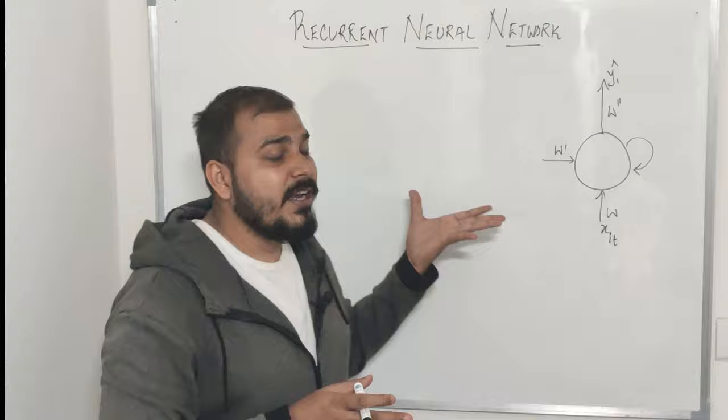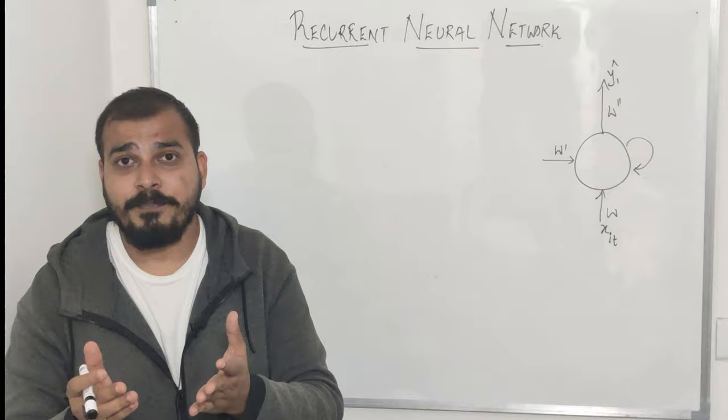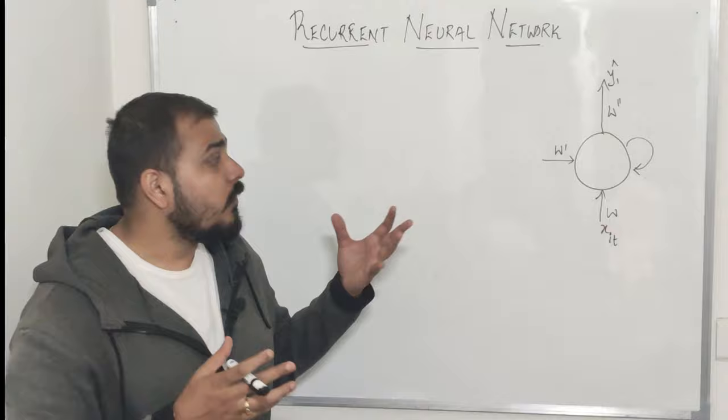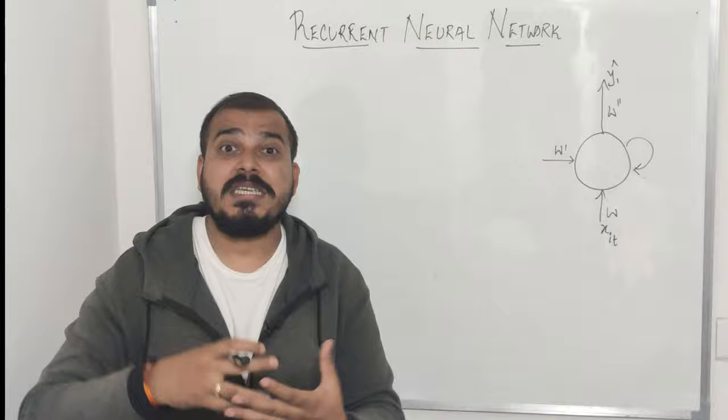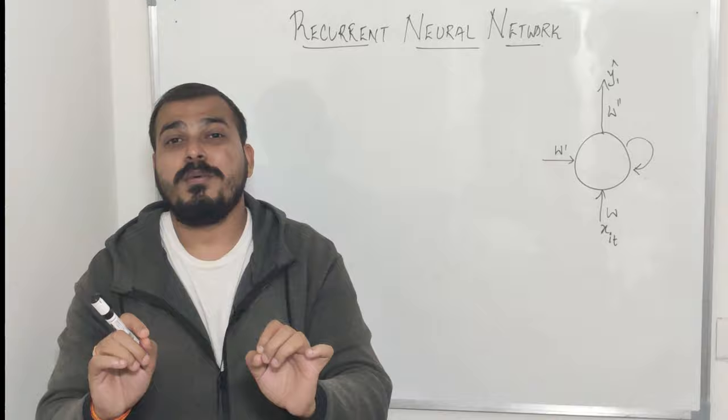In this particular part we'll discuss why recurrent neural network is required. In the next part we'll discuss about the math behind the recurrent neural network, where we'll understand the forward propagation, backward propagation, how it works, and how it works with respect to sequences of data.